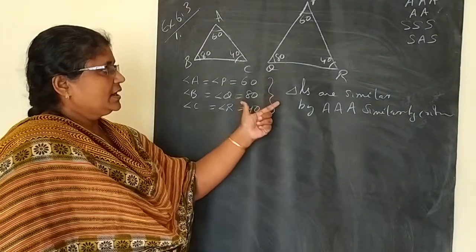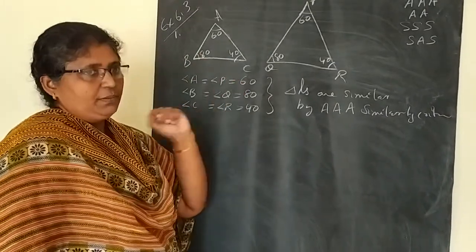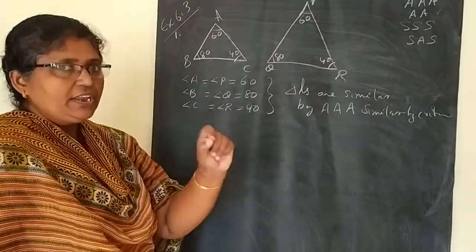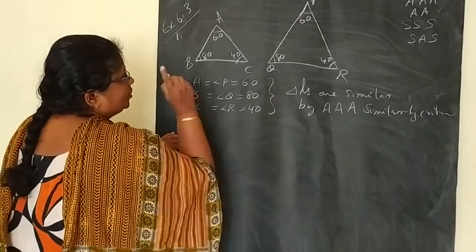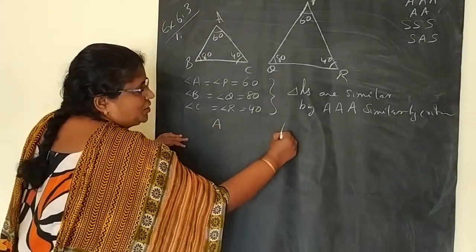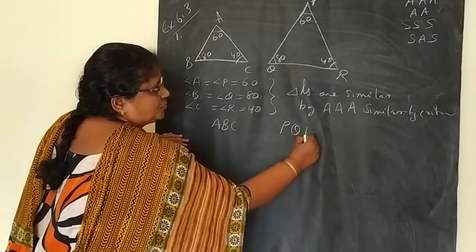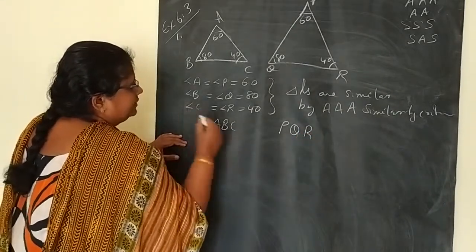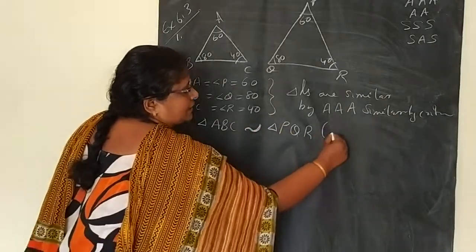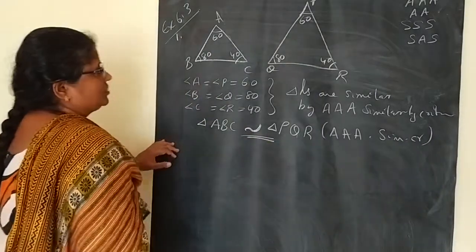By using that particular criteria, these two triangles are similar. We identified that this first question is similar. Now, if they are similar, you have to write the symbolic form. This is very, very important — while writing the name of a triangle, you have to write the corresponding parts in the same order. A corresponds to P, B corresponds to Q, C corresponds to R. So triangle ABC is similar to triangle PQR by AAA similarity criteria. This is the first answer.